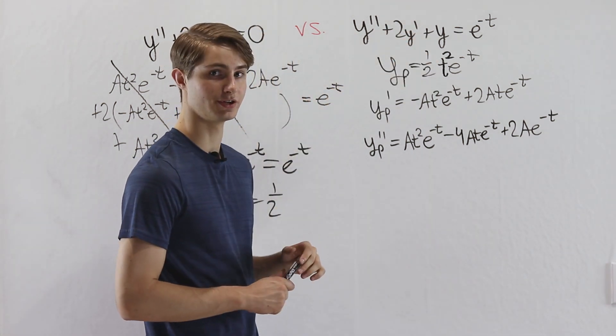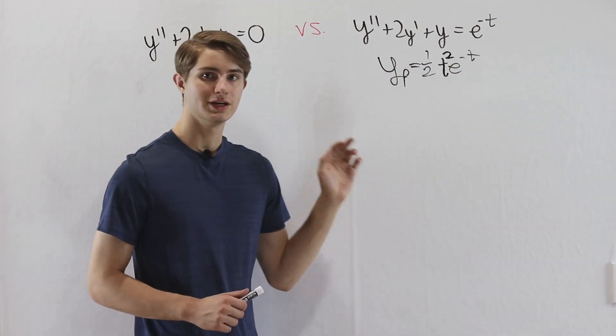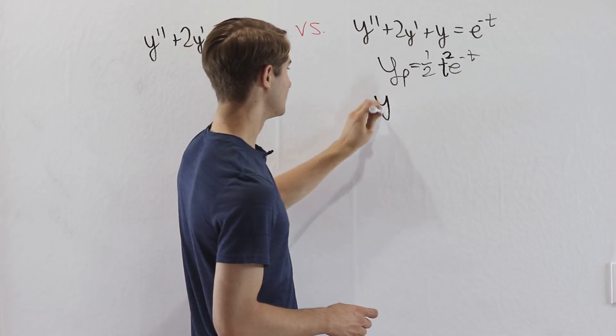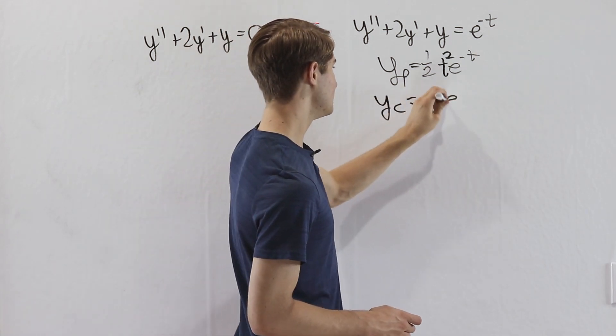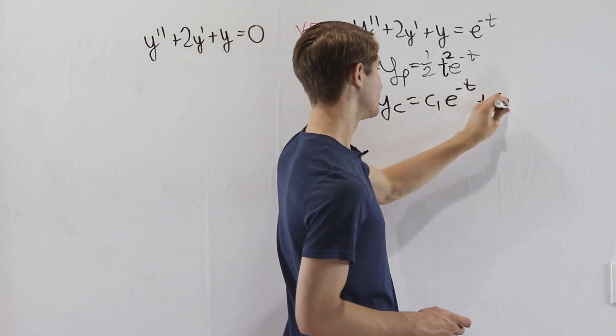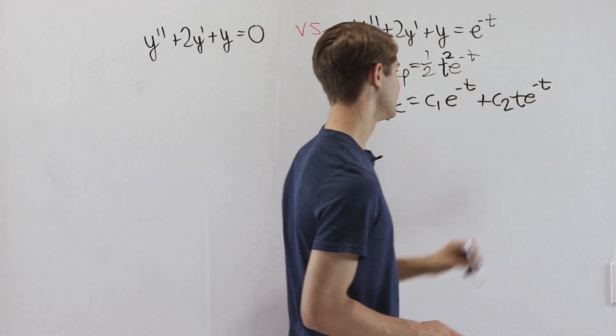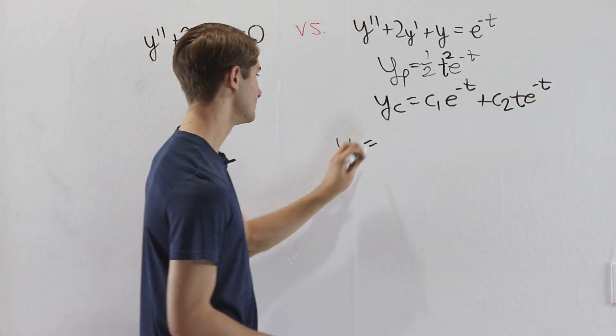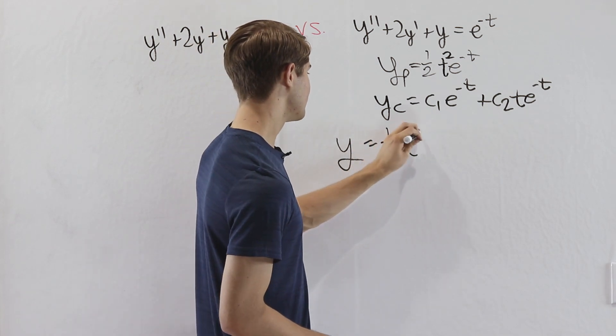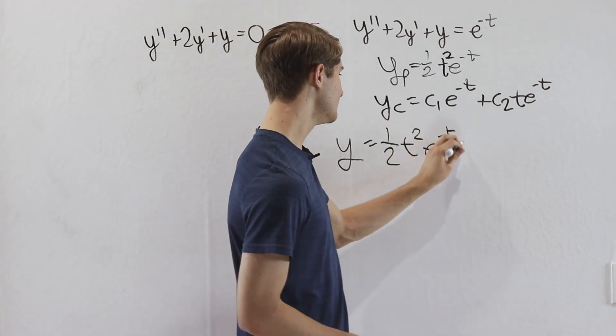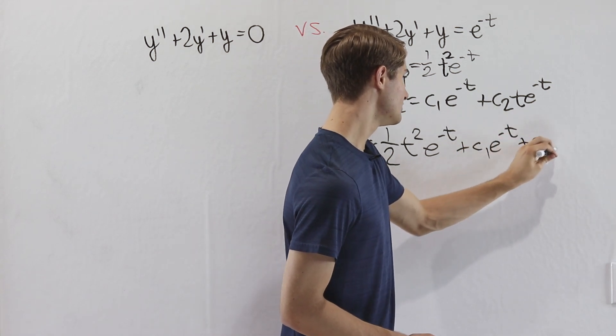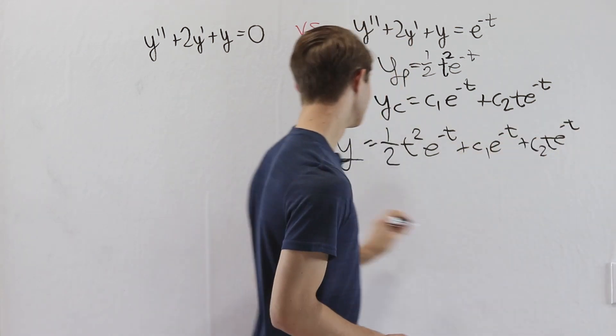So let's clear the board a little bit here. So I've cleared the board. Now we have a little more space. This is our particular solution. And then remember the complementary solution was c1 e to the negative t plus c2 t e to the negative t. And our final answer y is going to be the sum of these two. So we'll have 1 half t squared e to the negative t plus c1 e to the negative t plus c2 t e to the negative t.